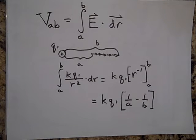Okay. But that's for a point charge. What if we don't have a point charge? What if we have, say, a uniform field in between two plates?